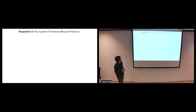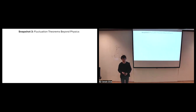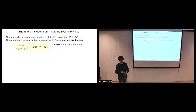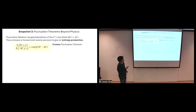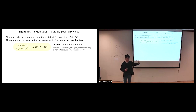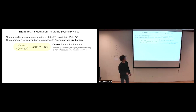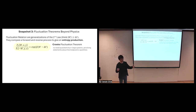One last snapshot: fluctuation relations. For those studying thermodynamics and statistical mechanics, you might be surprised I haven't mentioned these yet. Think of them as generalizations of the second law. What's very nice about them is that they compare forward and reverse process statistics, and even without strong thermodynamic assumptions - like quasi-static transformations or large particle numbers - you can still get very concrete statements about thermodynamic quantities like the change in free energy.